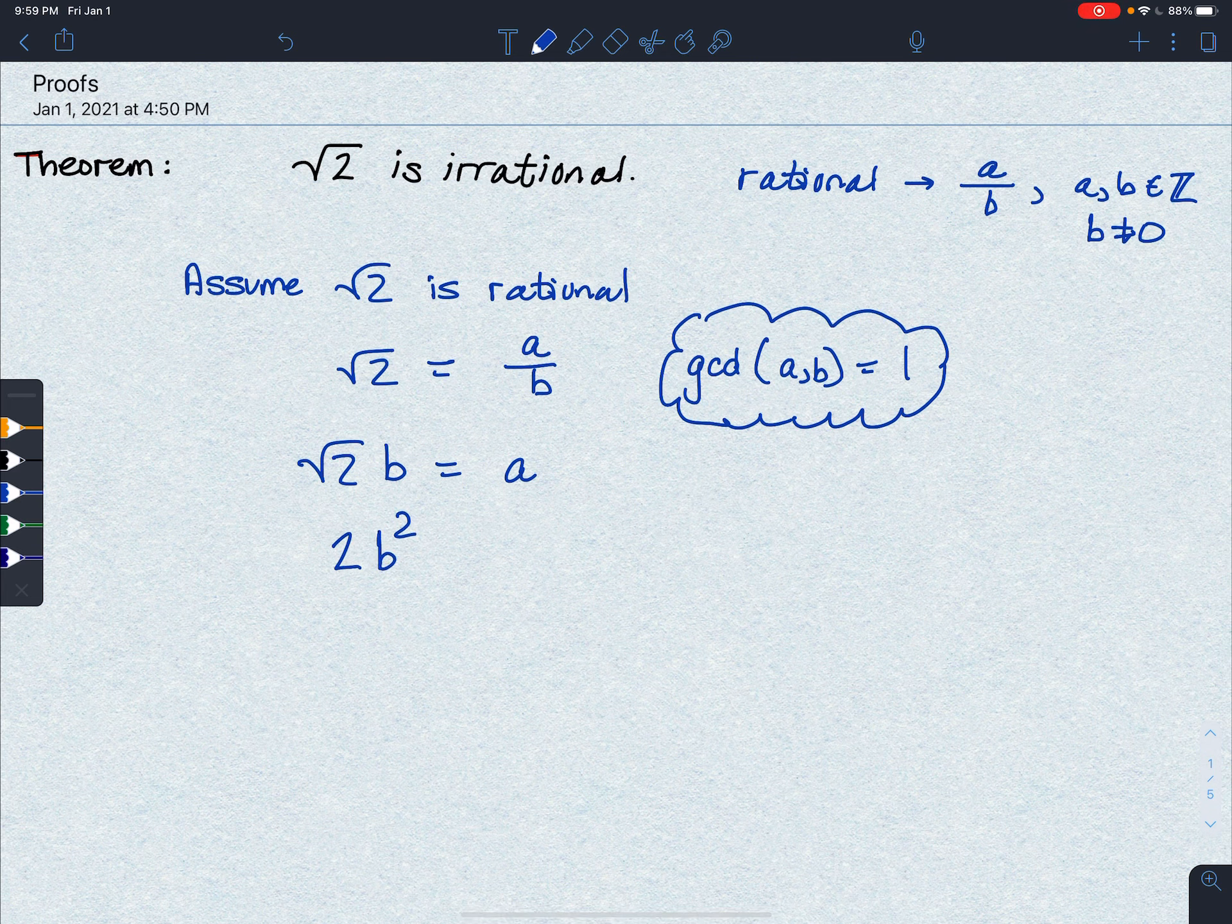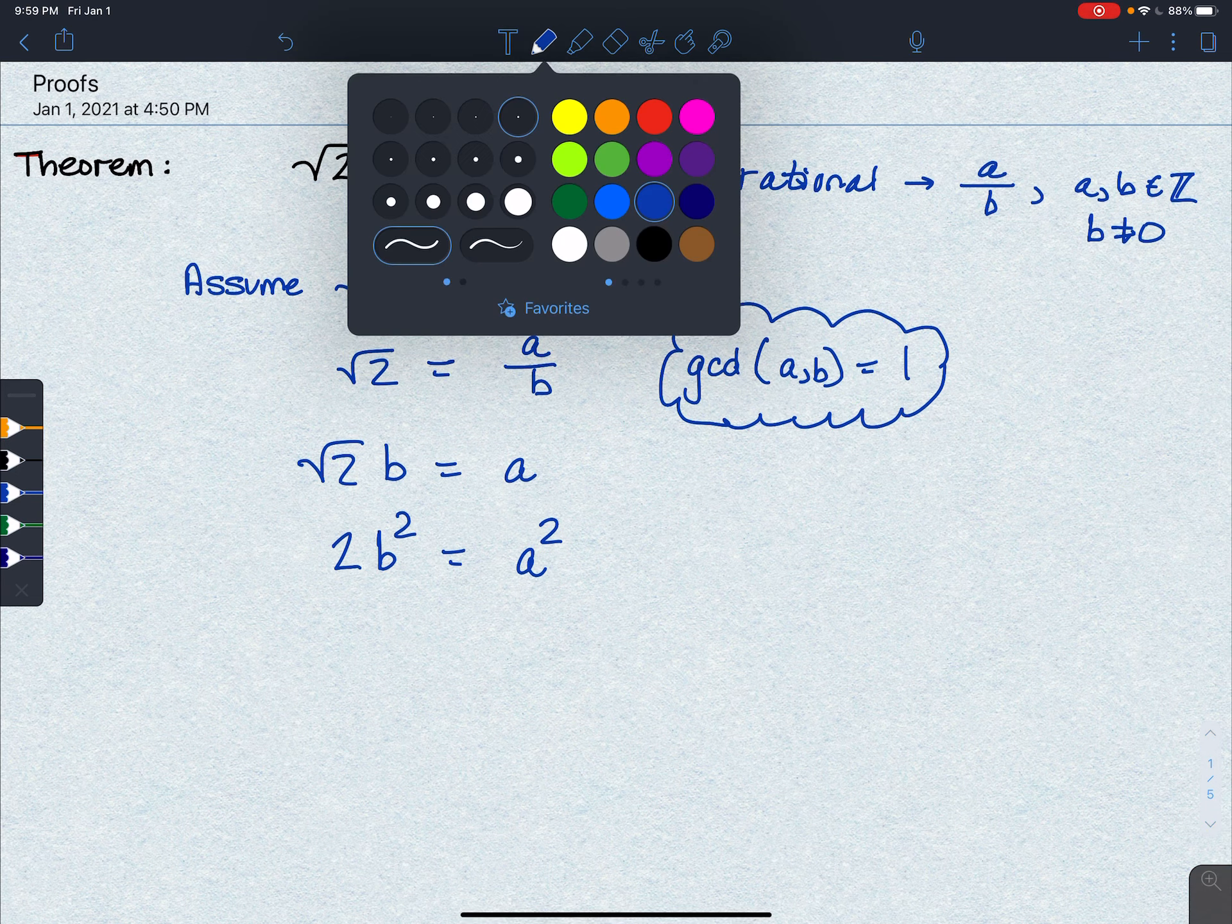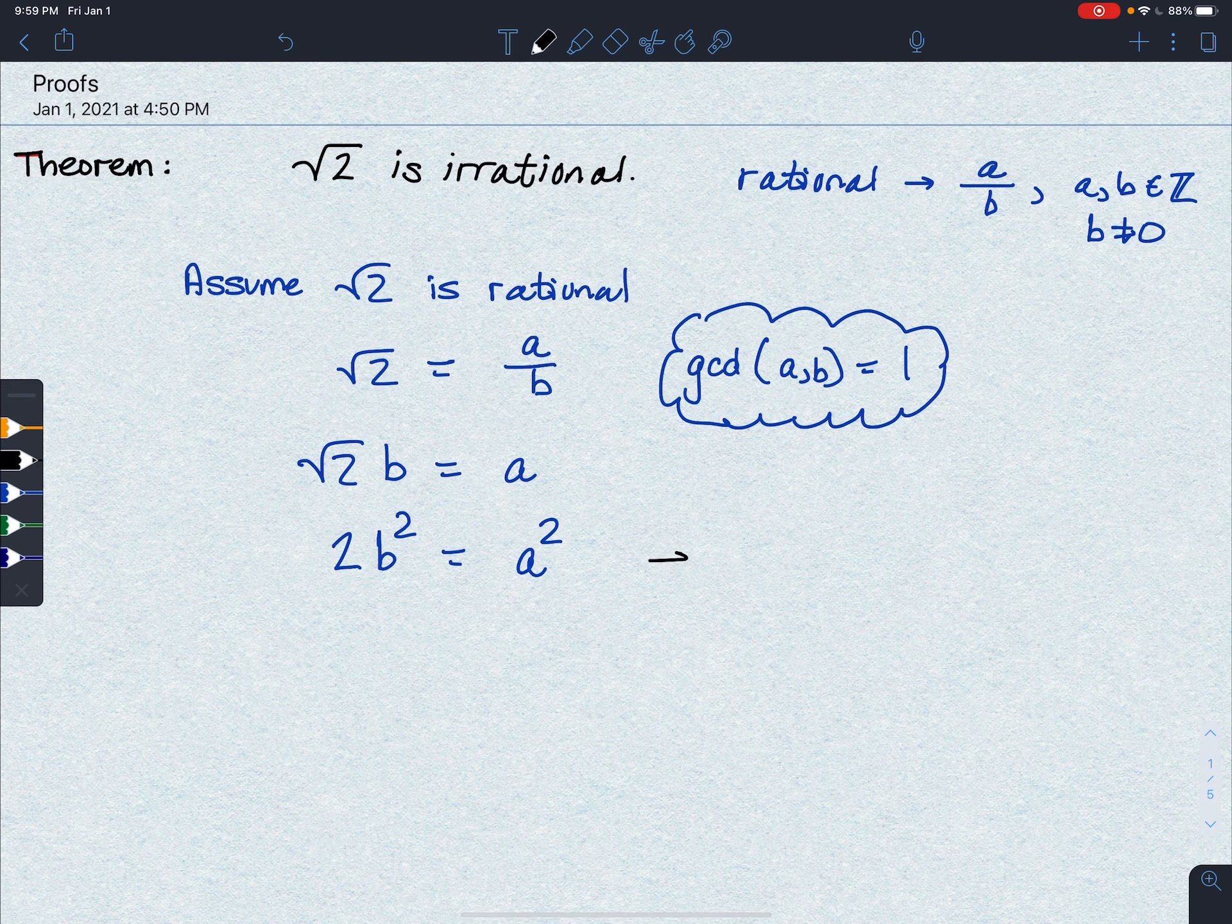Now, this says something here. This is telling me that a squared is even, because it's 2 times another number, right?